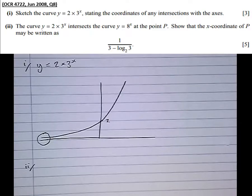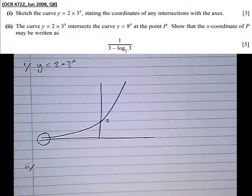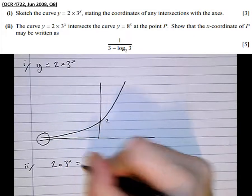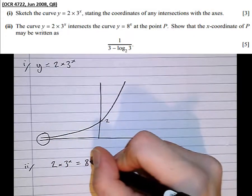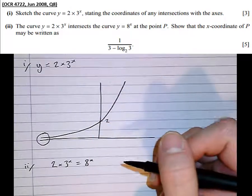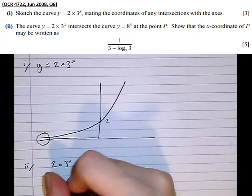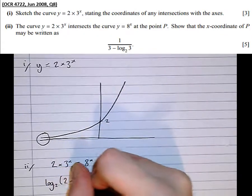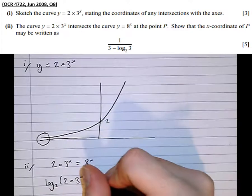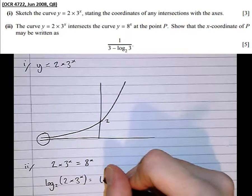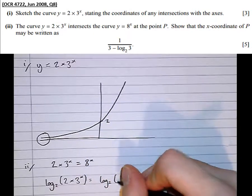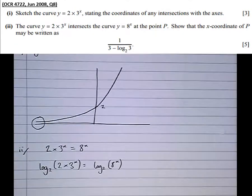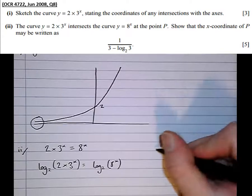Clearly, we're going to have to log to the base 2 both sides at some point here. So we've got y equals 2 times 3 to the x, which must equal 8 to the x. Both have the same y-coordinate. Let's log to the base 2 at this stage. So log to the base 2 of 2 times 3 to the power of x equals log to the base 2 of 8 to the x. At this point, I know I'm going to have to use my logarithm laws, so I'm going to write them all down here.